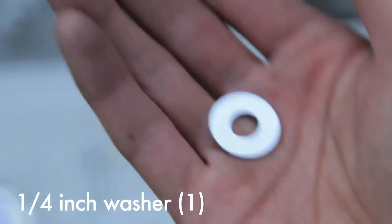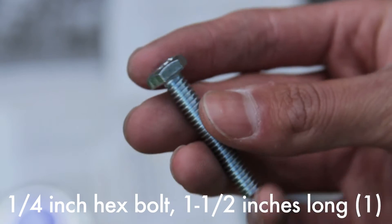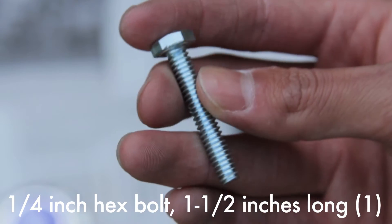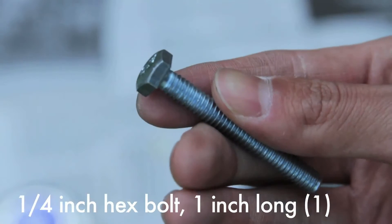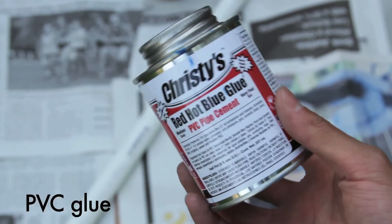Finally, you'll need a 1/4 washer, three 1/4 hex nuts, a 1/4 inch hex bolt that's 1 and a half inches long, and a hex bolt that's 1 inch long. Lastly, you'll need some PVC glue.